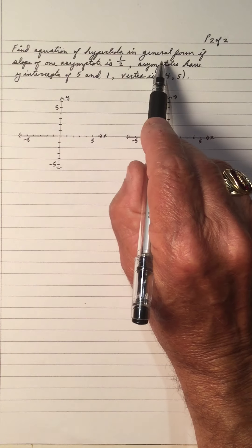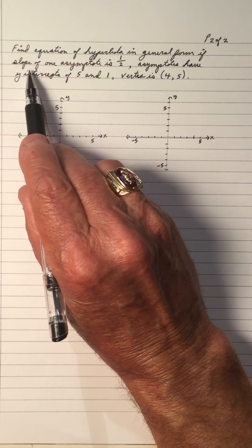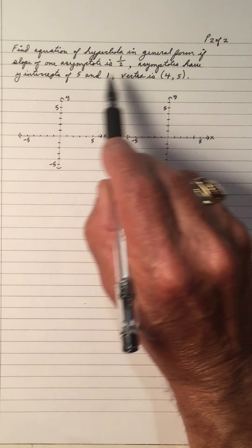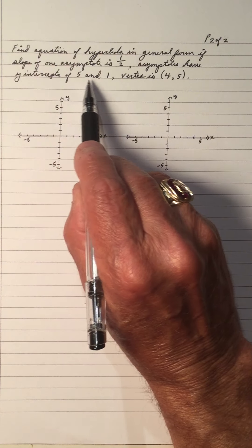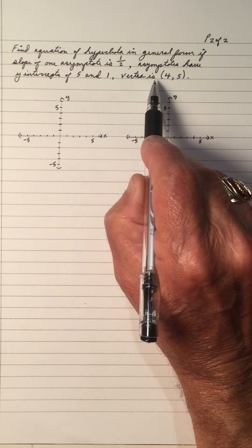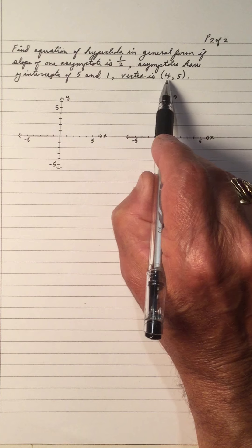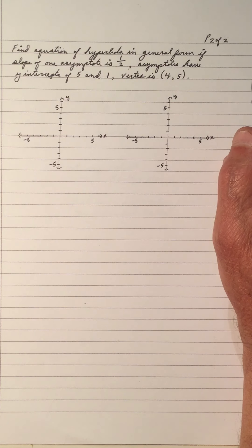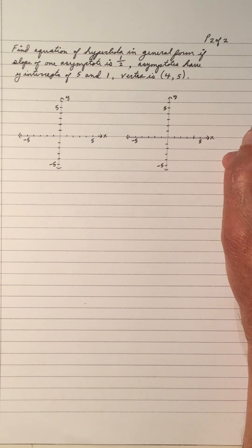It says, find the equation of the hyperbola in general form if the slope of one of the asymptotes is a half, the asymptotes have y-intercepts of 5 and 1, and one of the vertices is (4, 5). So you want to find the equation in general form. We have to find the transformation form first and then change it to the general.